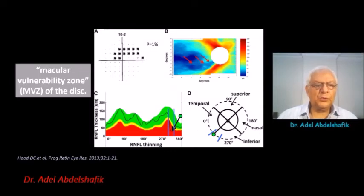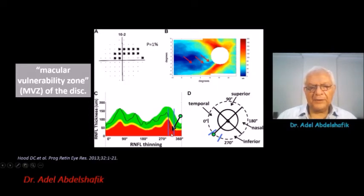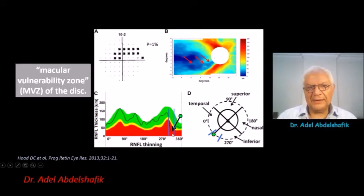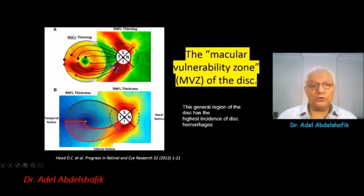Later, the same group pointed out an area called the macular vulnerability zone of the disc. When this area is affected, they believe it will be associated with changes in the ganglion cells of the macula. The vulnerable zone around the disc is associated with changes in the macular area. Ganglion cell changes are on the temporal side of the fovea, and when involved, the vulnerability zone around the disc is also involved.